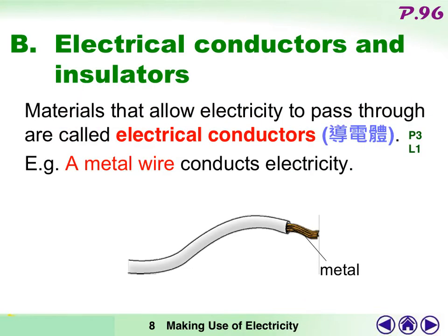Let's move on. In this part, we will learn more about electrical conductors and insulators. Materials that allow electricity to pass through are called electrical conductors. For example, a metal wire conducts electricity.